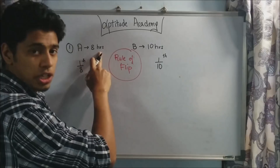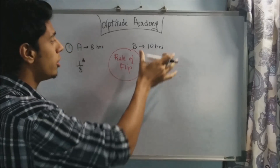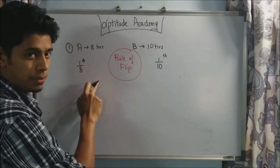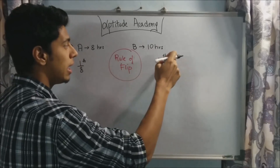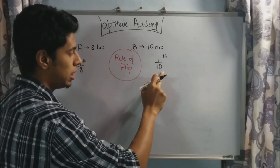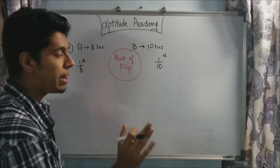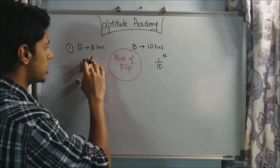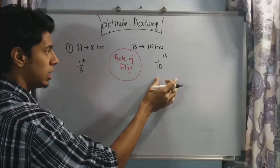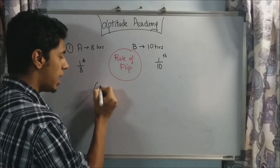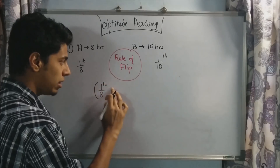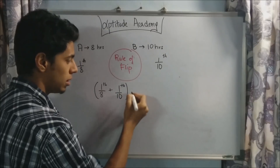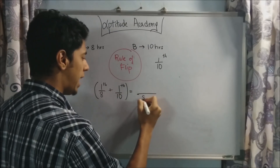A takes eight hours to finish a task and B takes ten hours to finish the same task. By the rule of flip, if A takes eight hours to finish a task, then every hour he finishes one by eighth of the work. B takes ten hours, so by the rule of flip, every hour B finishes one by tenth of the work. They're working together but independently — meaning B does not affect A's work and A does not affect B's work. Every hour A is doing one eighth and B is doing one tenth of the work.